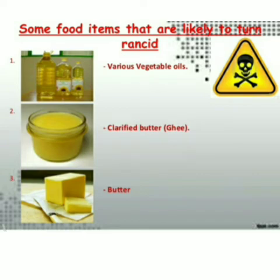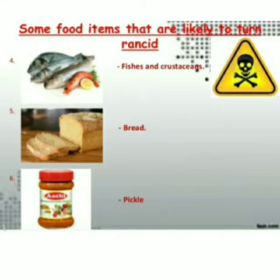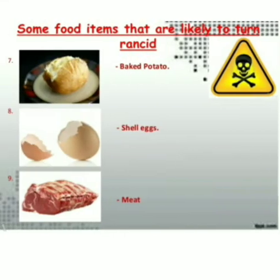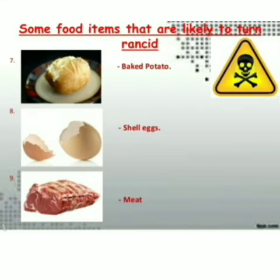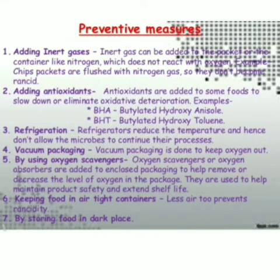Some food items that are likely to turn rancid include: vegetable oil, ghee, butter, fish, bread, pickles, baked potatoes, shell eggs, and meat. These are all materials that can turn rancid.